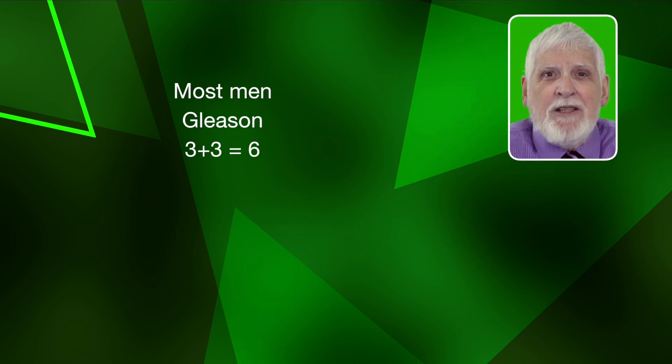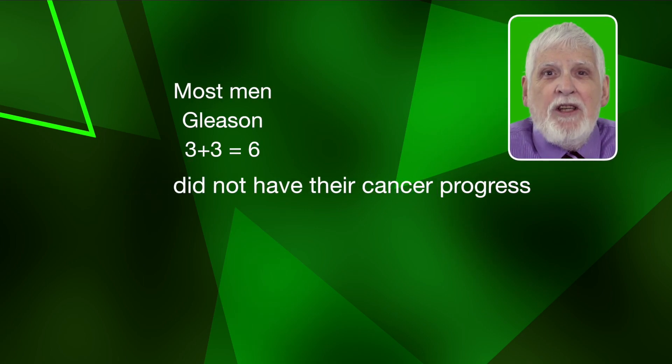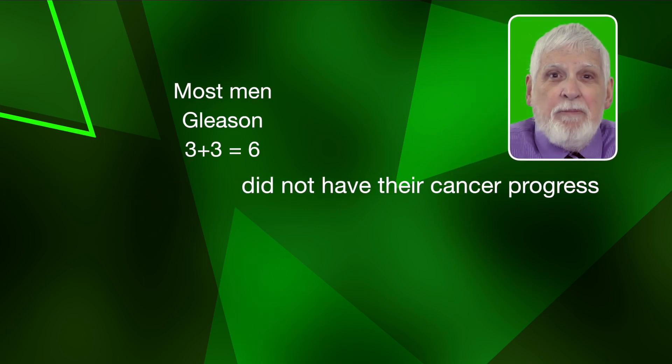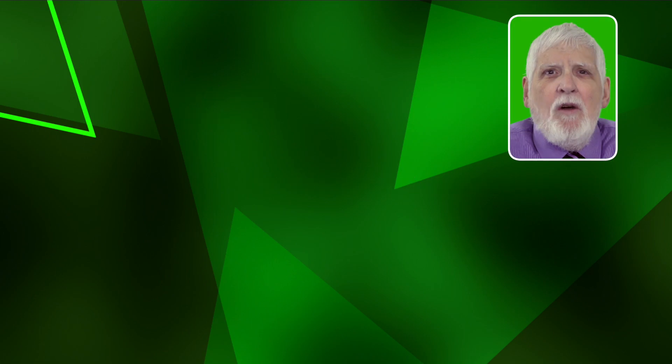The first problem with the Gleason score was fixed by pathologists a few years ago. They noticed that most men who had a Gleason score of 3 plus 3 equals 6 did not have their prostate cancer progress. When they looked at the biopsy samples from the men with Gleason score 3 plus 3 that did not do well, they noticed something striking.